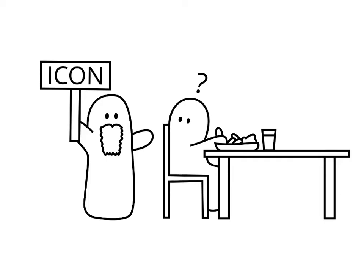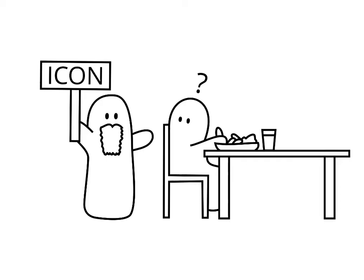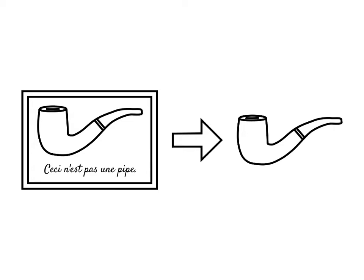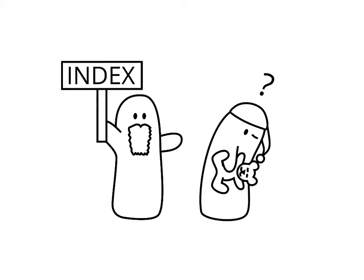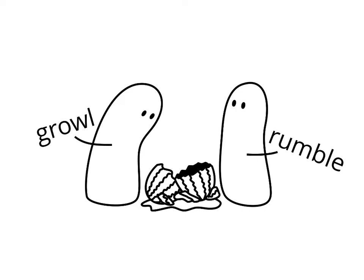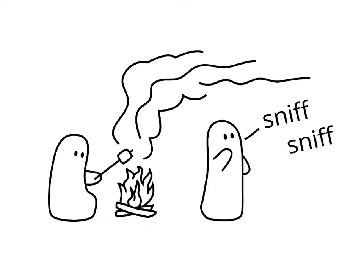An icon directly resembles the object — it shares tangible qualities with it. For example, a painting of a pipe is an icon representing a pipe, a map of London is an icon representing London, and the sound of coconuts may be an icon representing the sound of horses' hooves in a film. An index has an implied association with the object — the sign and object are connected in a logical way. For example, a growling stomach indicates hunger, sunglasses and a white cane indicate blindness, and the smell of smoke indicates a nearby fire.